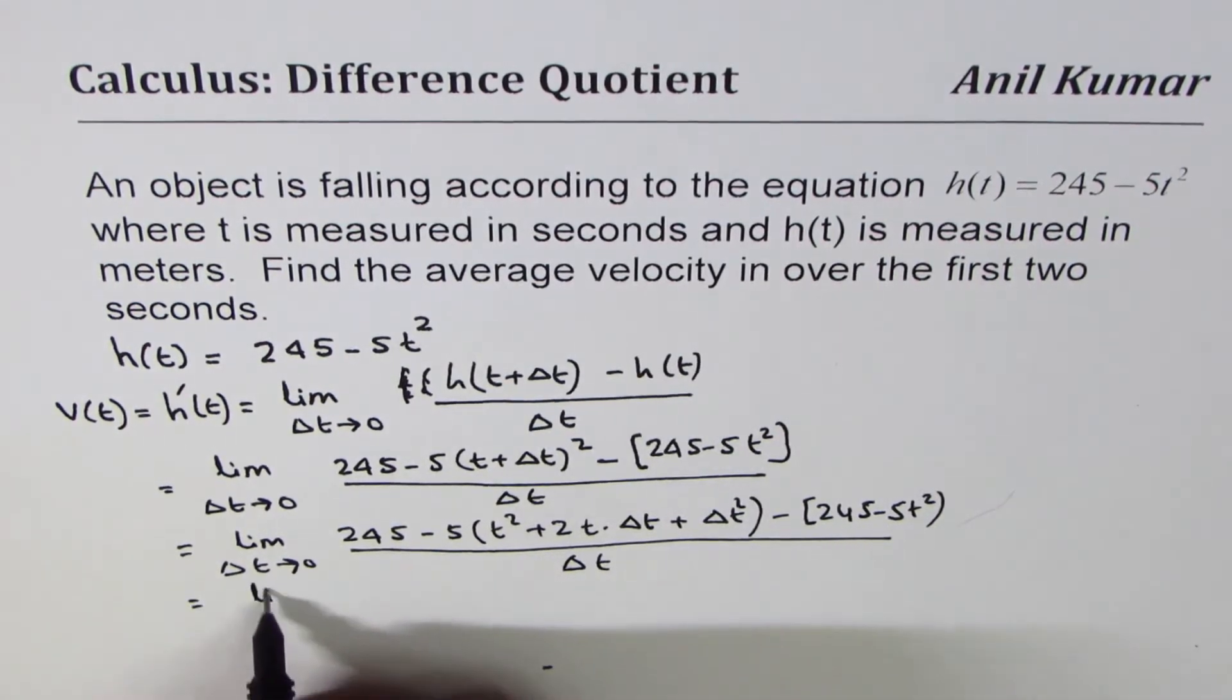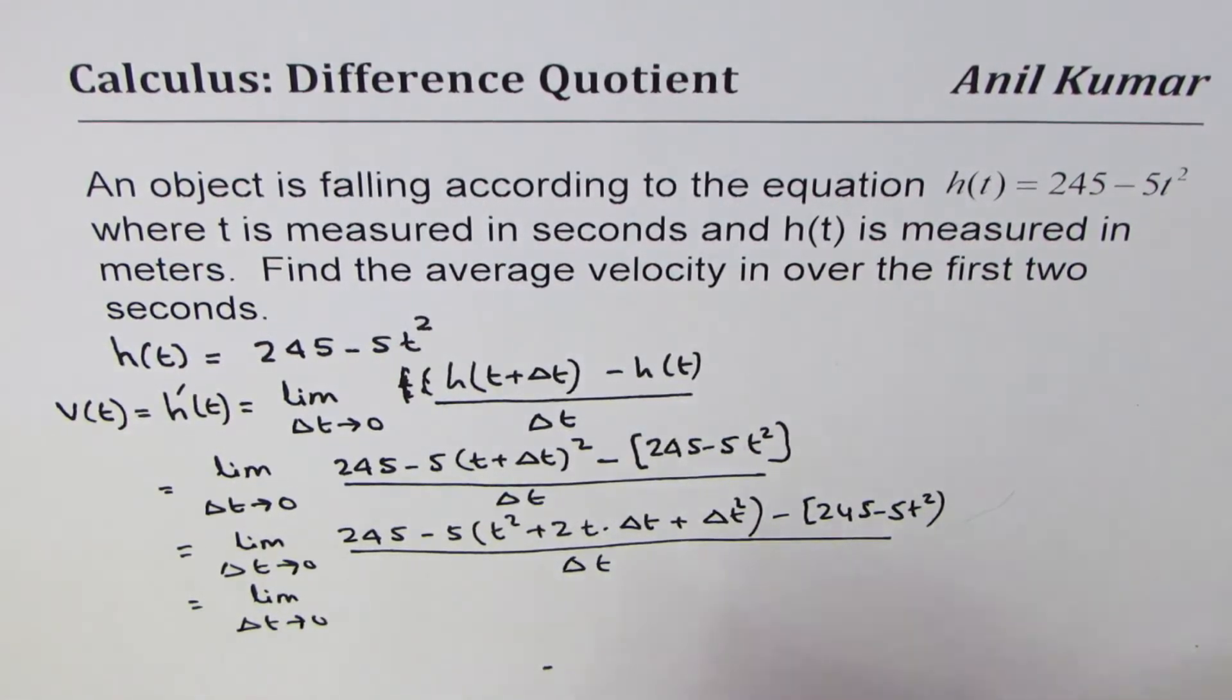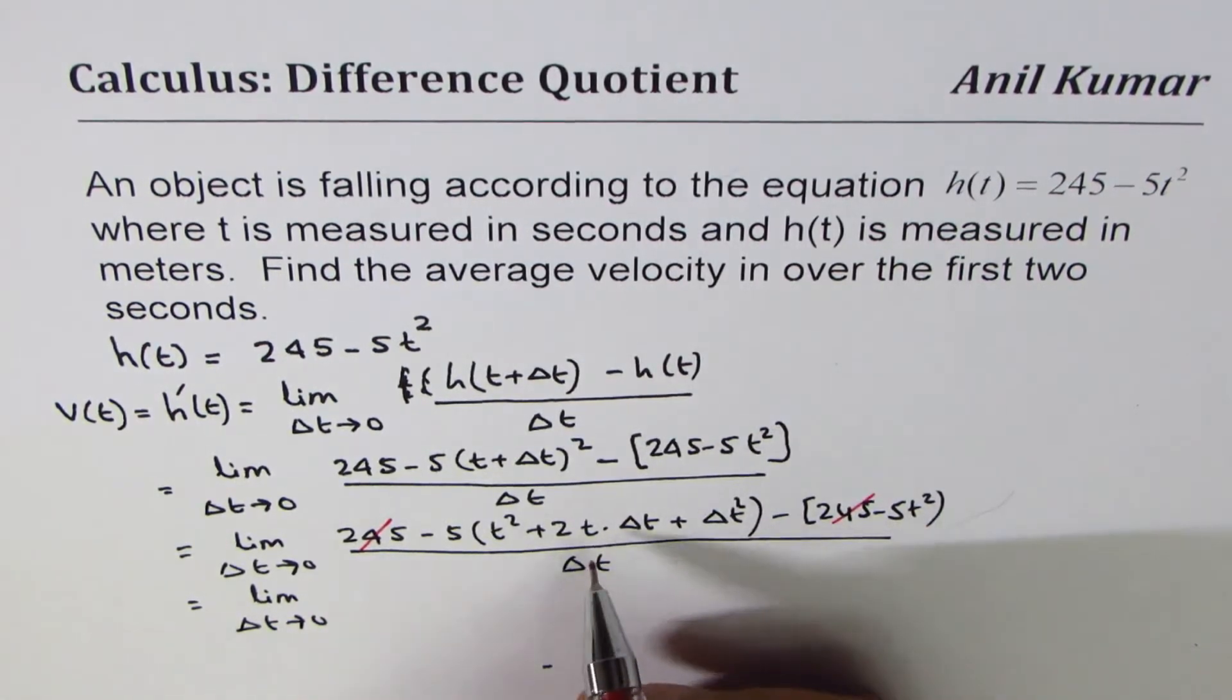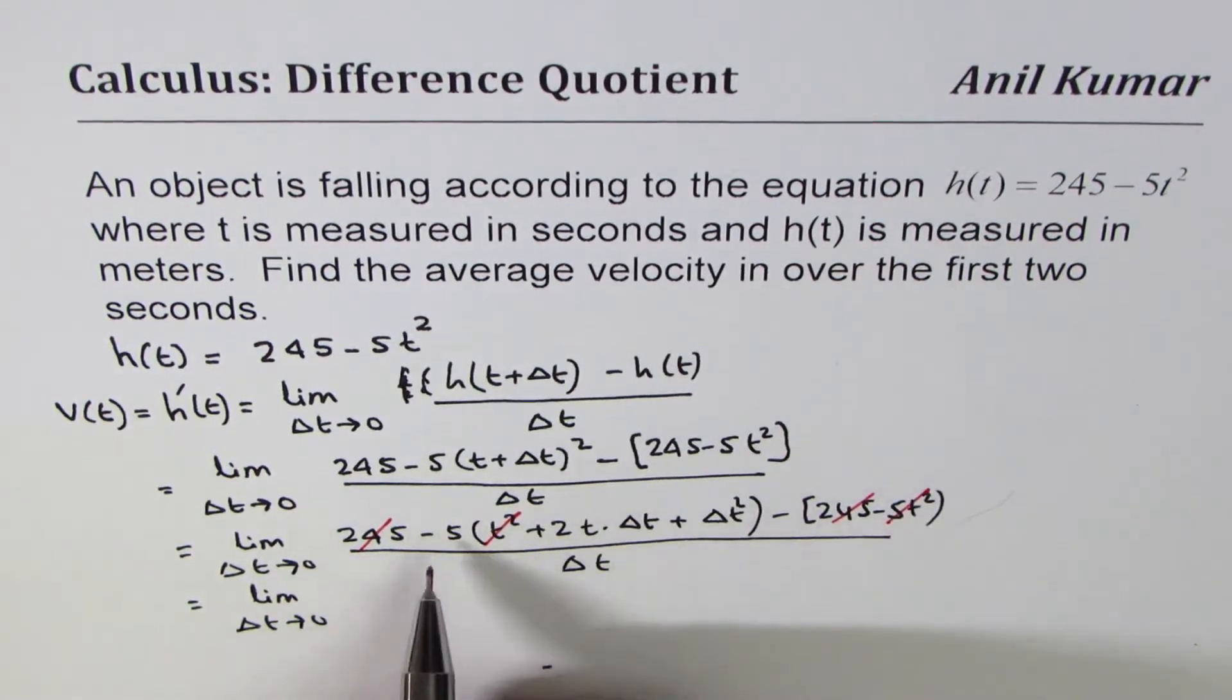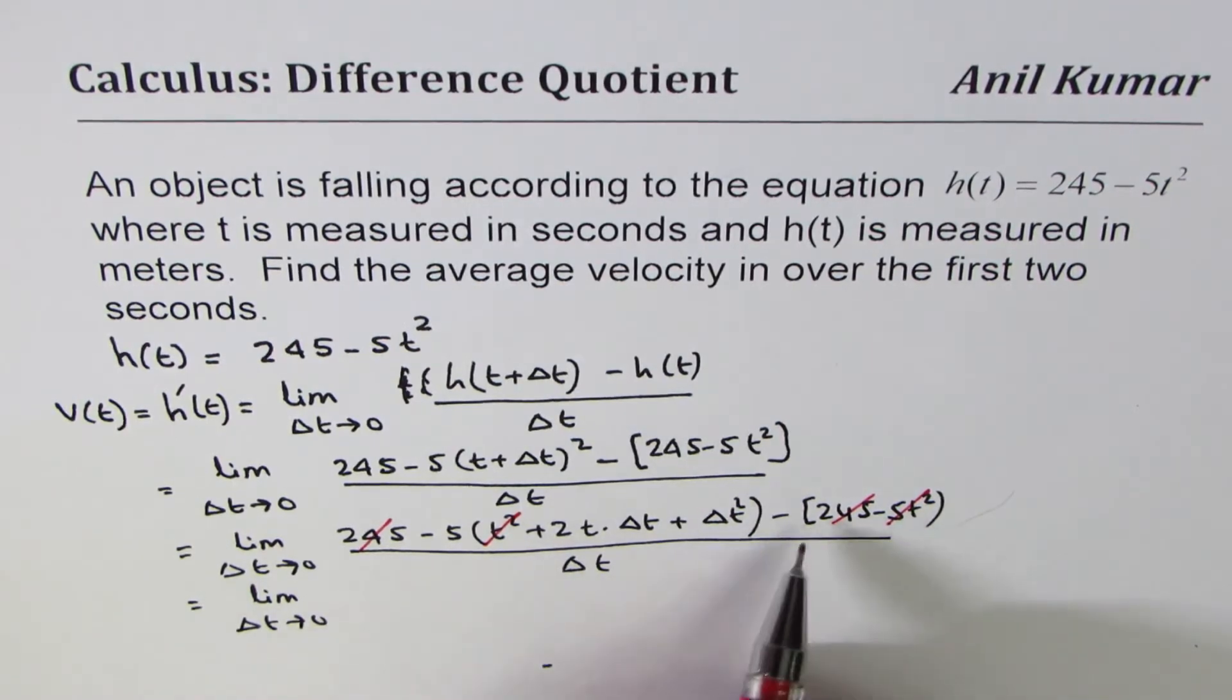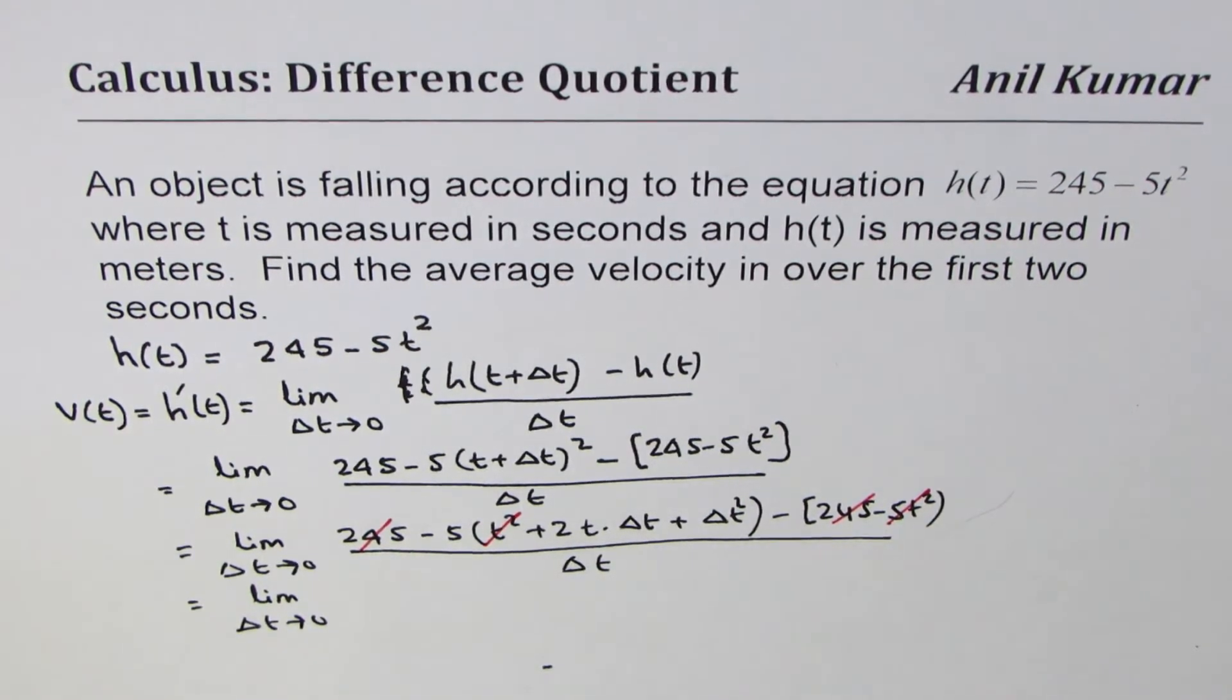That gives us limit Δt approaches 0. Now, as you can see, these two terms will cancel out. -5t² will cancel out with 5 times t². If I multiply, I get -5t². So that cancels out.